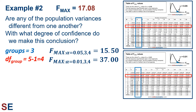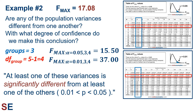Looking at the Fmax critical values table, we look at the column for three groups and the row for 4 degrees of freedom. The critical values are 15.50 for an alpha of 0.05 and 37 for an alpha of 0.01. Our Fmax value of 17.08 is larger than 15.50, so the p-value is less than 0.05. But it's not as large as 37, so the p-value is larger than 0.01. We can therefore say that at least one of these variances is significantly different from at least one of the others (0.01 < p < 0.05). This means we can't use this data for a technique that requires equal variances like the ANOVA.